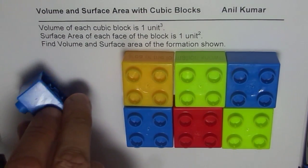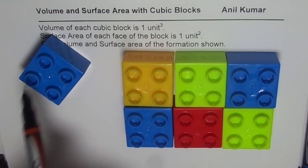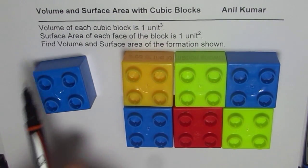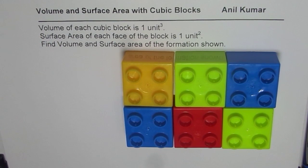So individually, total surface area for each block is six since it has six surfaces: top, bottom, two sides. You can see front, back, sides, top and bottom. So we have six surfaces, each surface has area of one unit square.